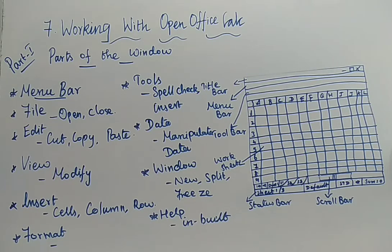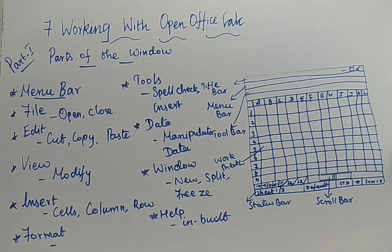Next is Window — by means of this menu, you can split it, have a new window, and freeze that window. Last, you are going to have Help in the menu bar. Help is nothing but an inbuilt function — inbuilt help function that is available. Just by clicking that, you can have help for the needed topic. Clear with the menus available under the menu bar.